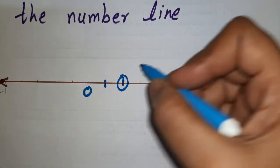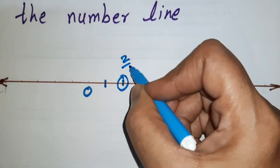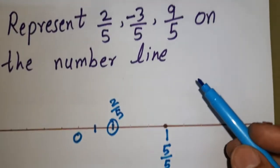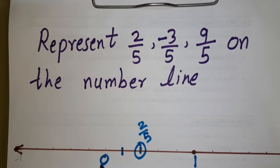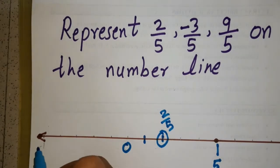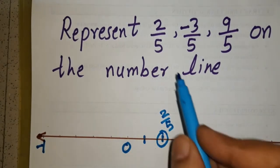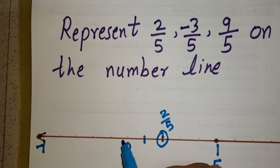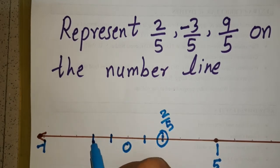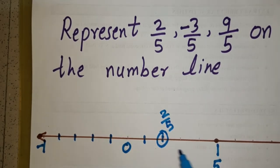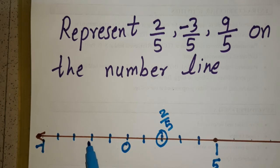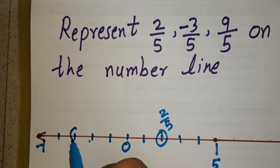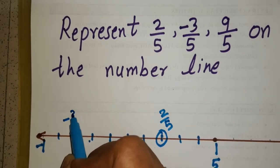What about minus 3 by 5? Minus 3 by 5 is going to lie between 0 and minus 1. The denominator is 5, so we need to make 5 equal parts between 0 and minus 1, the same as we did between 0 and 1. Each part from here is minus 1 by 5, minus 2 by 5, minus 3 by 5. This is how we represent minus 3 by 5 on the number line.